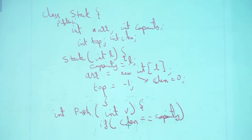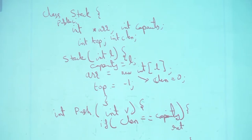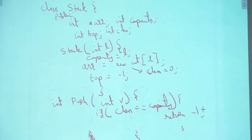If cLength equals capacity, we can't do anything about it. We return minus one. In the calling program, if we get minus one, we say stack is full. That could also be printed here as a line — it's up to us.